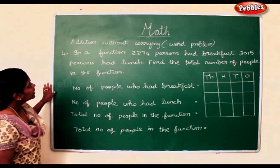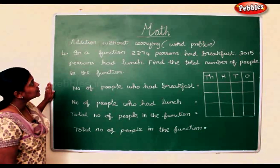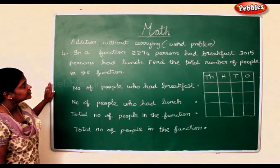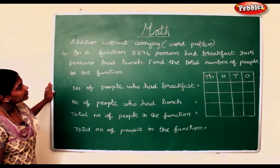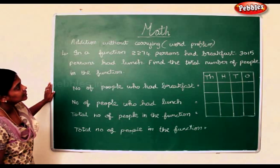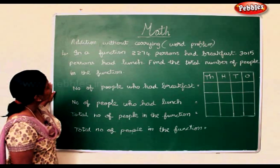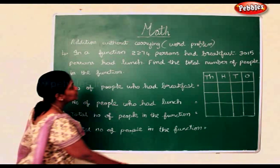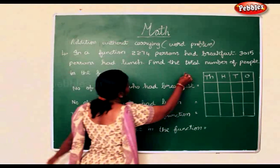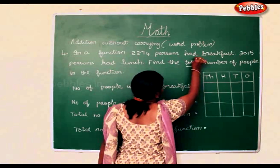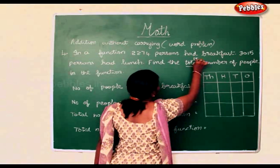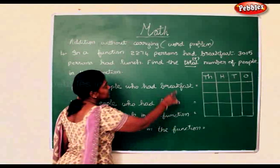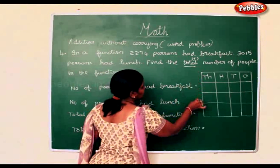In a function, 2,274 persons had breakfast and 3,015 persons had lunch. Find the total number of people in the function. We will do an addition for this since total is given.